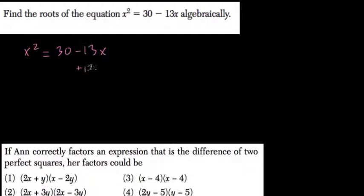So, we're going to add 13x to both sides. And we're almost there. Then I have x squared plus 13x equals 30.